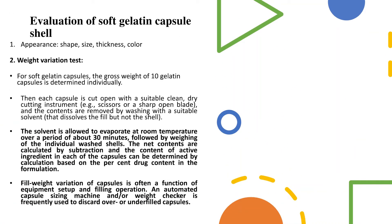The first evaluation step is the appearance test, which includes shape analysis, size analysis, thickness, and color of the soft gelatin capsules. Every capsule — whether hard or soft gelatin — must pass these tests to comply with regulatory requirements. These tests are performed on every batch to ensure the manufactured product meets specifications.